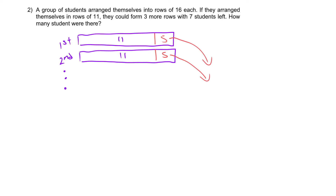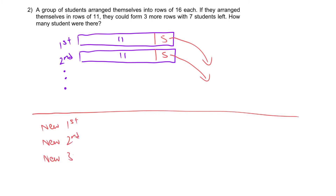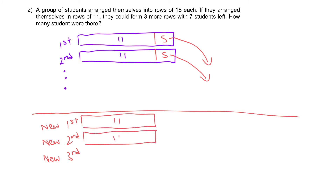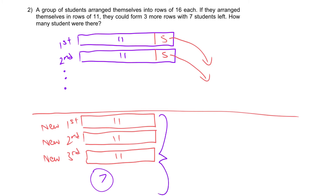Using red color, they are going to form new rows — the new first row, new second row, and new third row — each with 11 students. And we're going to have the 7 leftover students who have nowhere to go. So all these groups of 5 leave their current rows and form this: 3 rows of 11 and 7 left over.